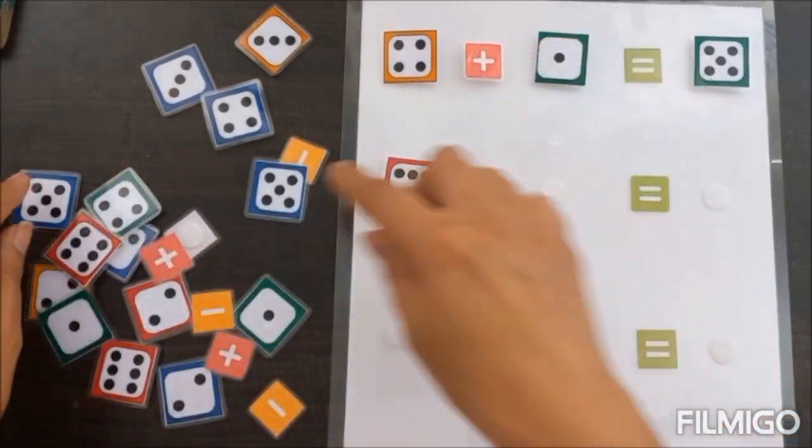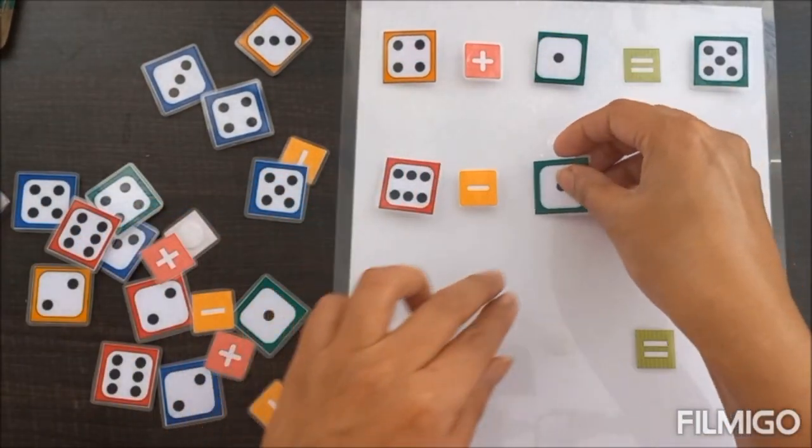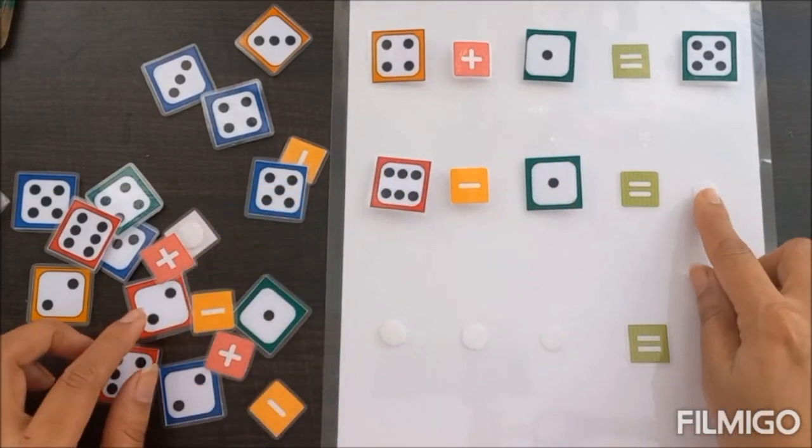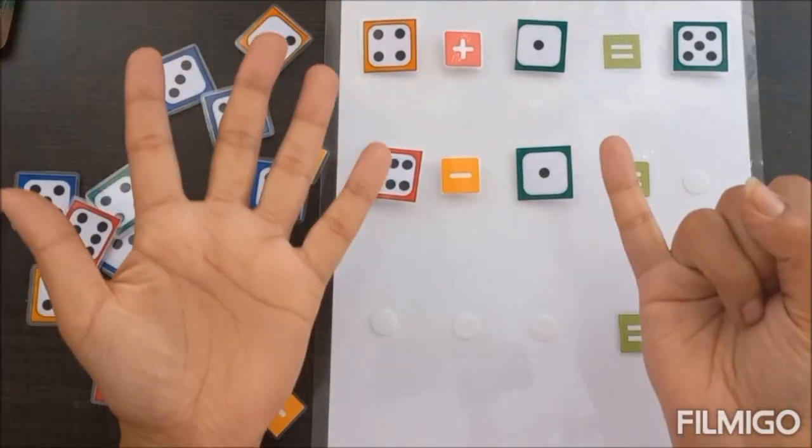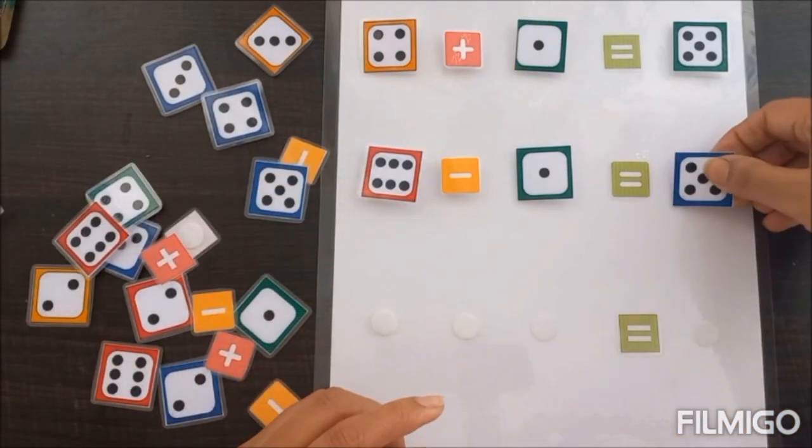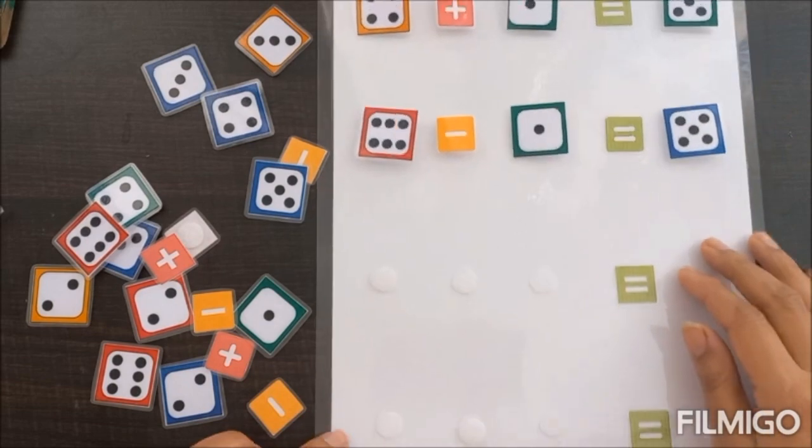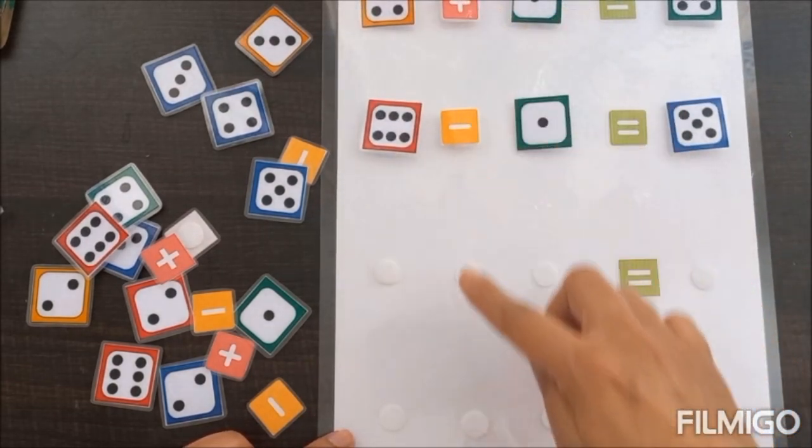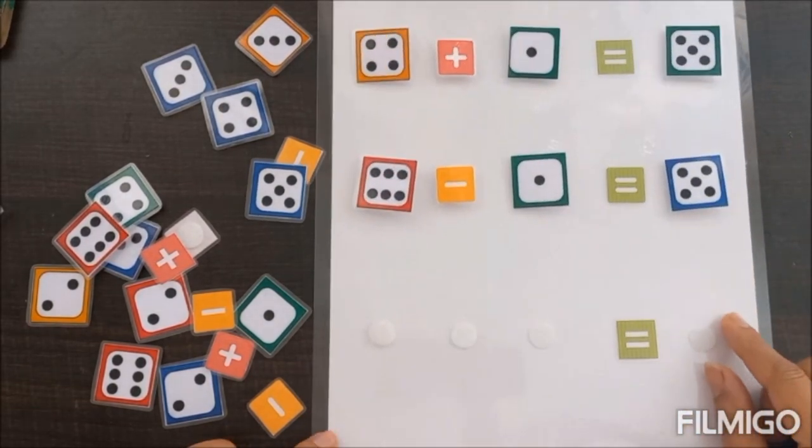minus 1, and the child will attach the answer here. 6 minus 1 is 5, so the child will pick 5 and attach it here. Similarly, we'll go ahead and do either subtraction or addition through this TLM.